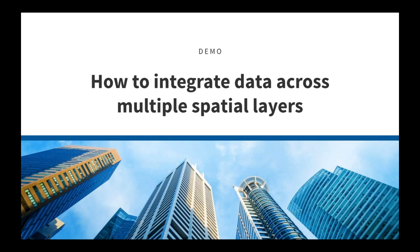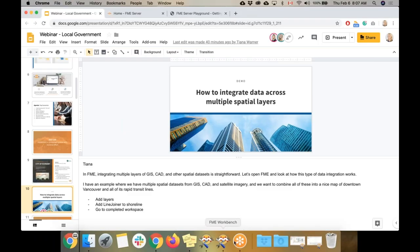In FME, integrating multiple layers of GIS, CAD, and other spatial datasets is straightforward. Let's open FME and look at how this type of data integration works. I have an example where we have multiple spatial datasets from GIS, CAD, and satellite imagery, and we want to combine all of these into a nice map of downtown Vancouver and all of its rapid transit lines.